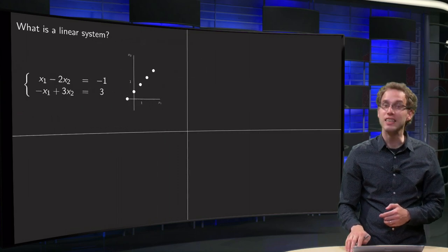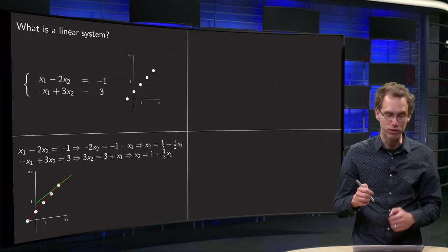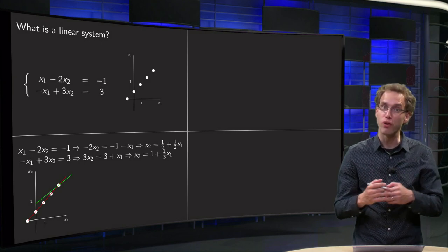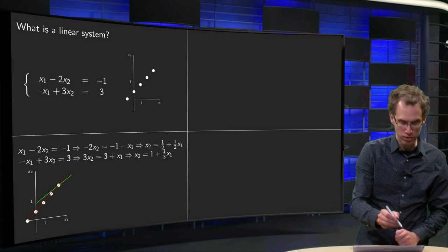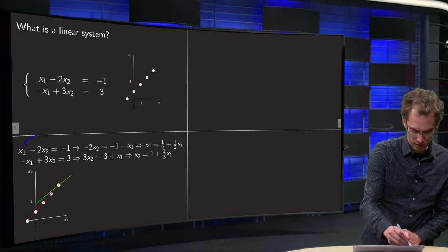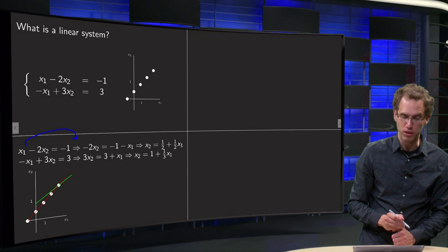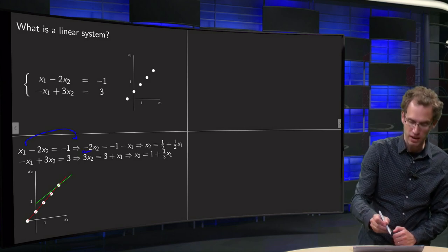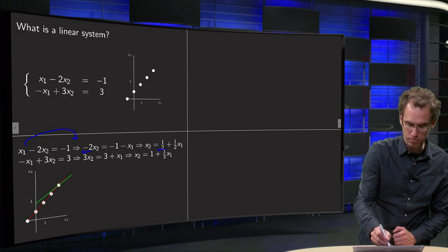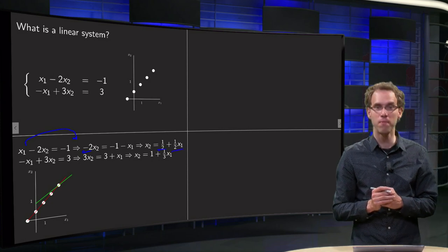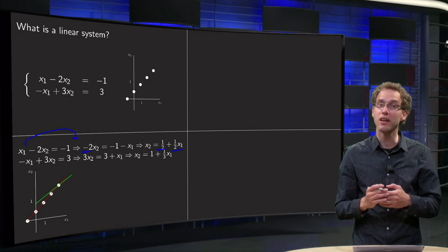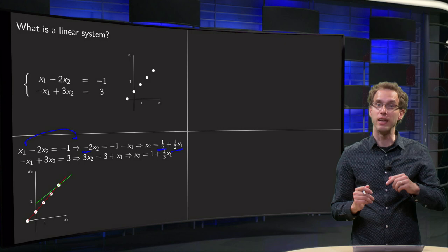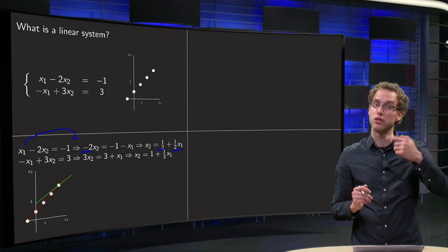Is that indeed the case? We can take the first equation, x1 minus 2x2 equals minus 1, and solve for x2. Bringing x1 to the other side gives minus 2x2 equals minus 1 minus x1, and dividing by minus 2 we find x2 equals 1 half plus 1 half times x1. That is indeed a straight line with slope 1 half and intersecting the x2 axis at (0, 1 half).